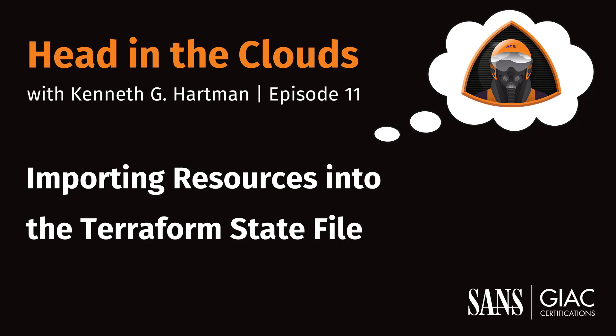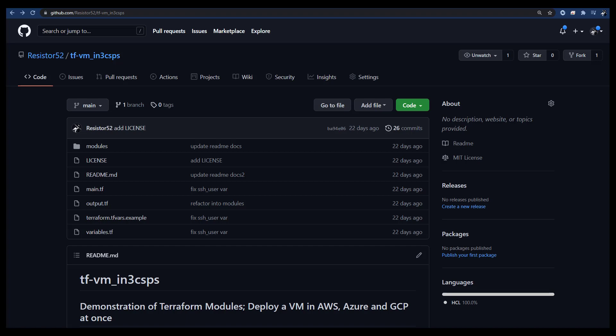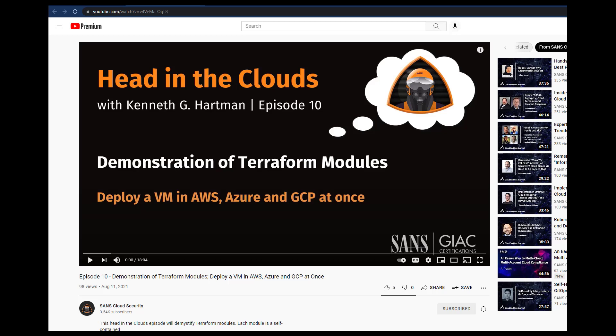Today we will cover how to import various resources into each of the big three cloud service providers, and also how to import when your Terraform scripts use modules. In this episode, we will use the same GitHub repository that we used in episode 10. In episode 10, we covered how to deploy a virtual machine in AWS, Azure, and GCP. To follow along with this episode, be sure to complete the setup, authentication, and deployment process for each module covered in episode 10. After you have completed all the activities for episode 10, we are now ready to play with AWS.